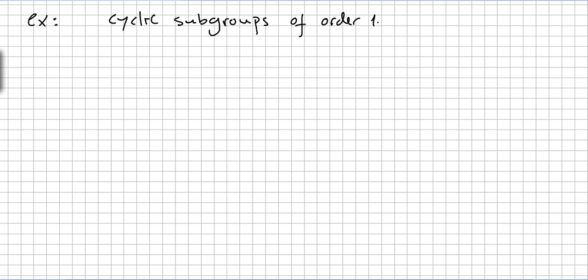Let's take another example. We want to determine the number of cyclic subgroups of order 10 in Z100 direct product by Z25. Same procedure, but this time we want cyclic subgroups, so we want an element (a, b) of order 10.